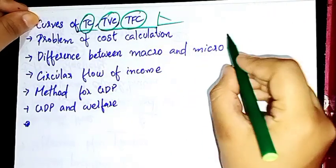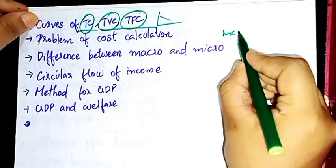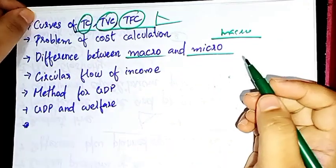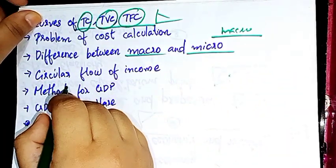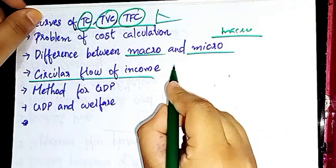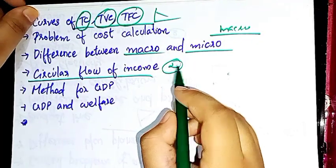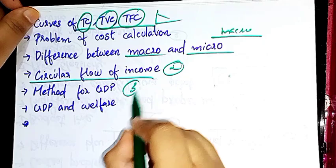This is macroeconomics, the difference between macro and microeconomics. Then circular flow of income is the second chapter in macroeconomics.